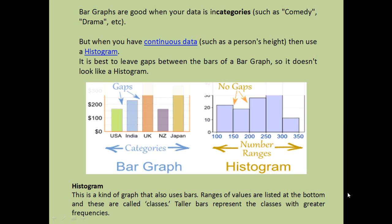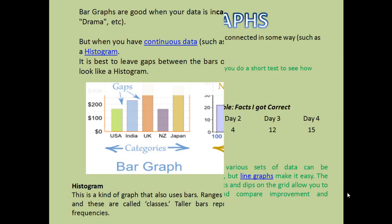A histogram is a kind of graph that uses bars, but on the x-axis you plot continuous figures — for example, 100 to 150, 150 to 200, 200 to 250, and so on. When you do not put gaps between these bars, it is basically a histogram.